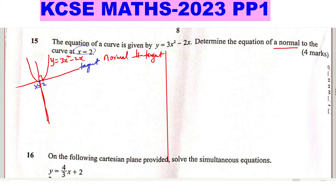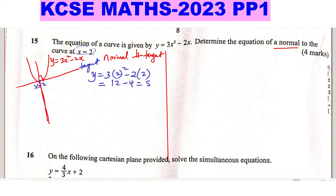We have this point where the normal and the tangent touch the curve. We only have the x-coordinate, so we need to find the y-coordinate. To get y, we use the function of the curve, since that point is on the curve. So y equals 3x squared minus 2x. Substituting x equals 2: y equals 3(4) minus 2(2), which gives 12 minus 4, equals 8. So this point is (2, 8).